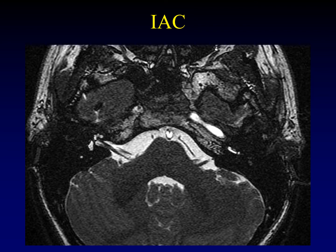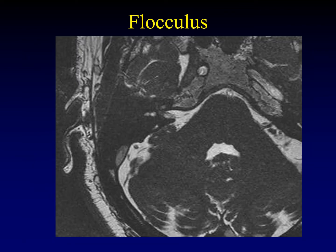Continuing medially, we'll talk about the internal auditory canal. The IAC is a tapered cylinder that extends from the porus acousticus — the opening — to the fundus, the dead end. Those are the two ends of the internal auditory canal, and it conveys multiple branches of the seventh and eighth cranial nerves. One other object worth pointing out: the flocculus of the cerebellum is frequently mistaken for an abnormal mass in the cerebellopontine angle cistern. If you see a mass-like structure just behind the porus acousticus, make sure it's not just the normal flocculus.